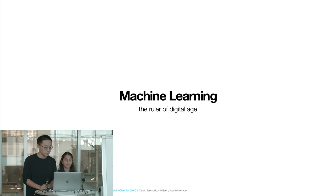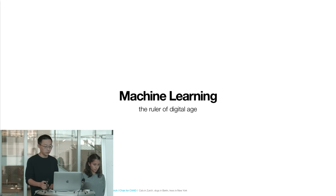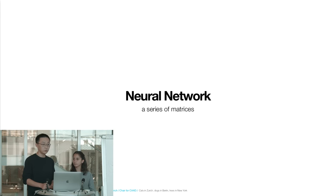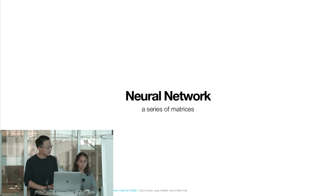Today we are in a different stage. The state-of-the-art machine intelligence today is machine learning — we will call it the ruler and the compass of the digital age. In the last lecture we talked about neural networks, and today we are going to continue with convolutional neural networks. Before introducing CNNs, we will first review what a neural network is, providing a new mathematical perspective: looking at a neural network as a series of matrices.